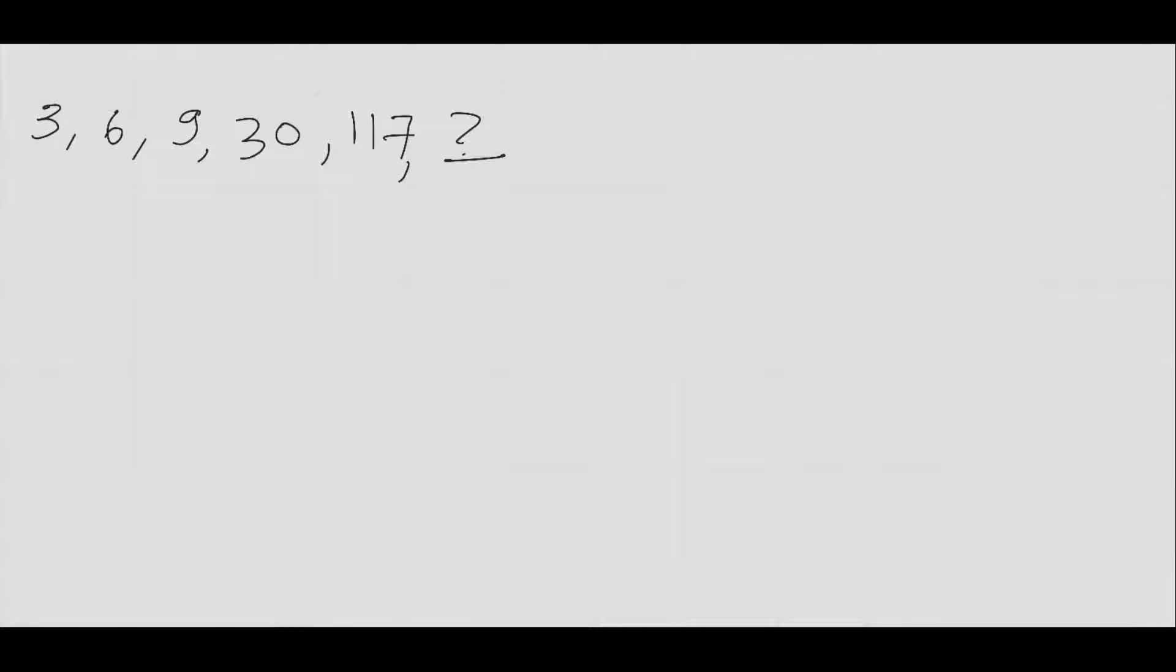By observation, we can see that all the numbers are multiples of three. Let's jump into the first approach, which is the difference approach. I take two consecutive numbers and see their difference. In this case, the differences are 3, 3, 21, and 87. I try to see if there is a pattern between the differences. We don't see any specific pattern except that they are also multiples of three.